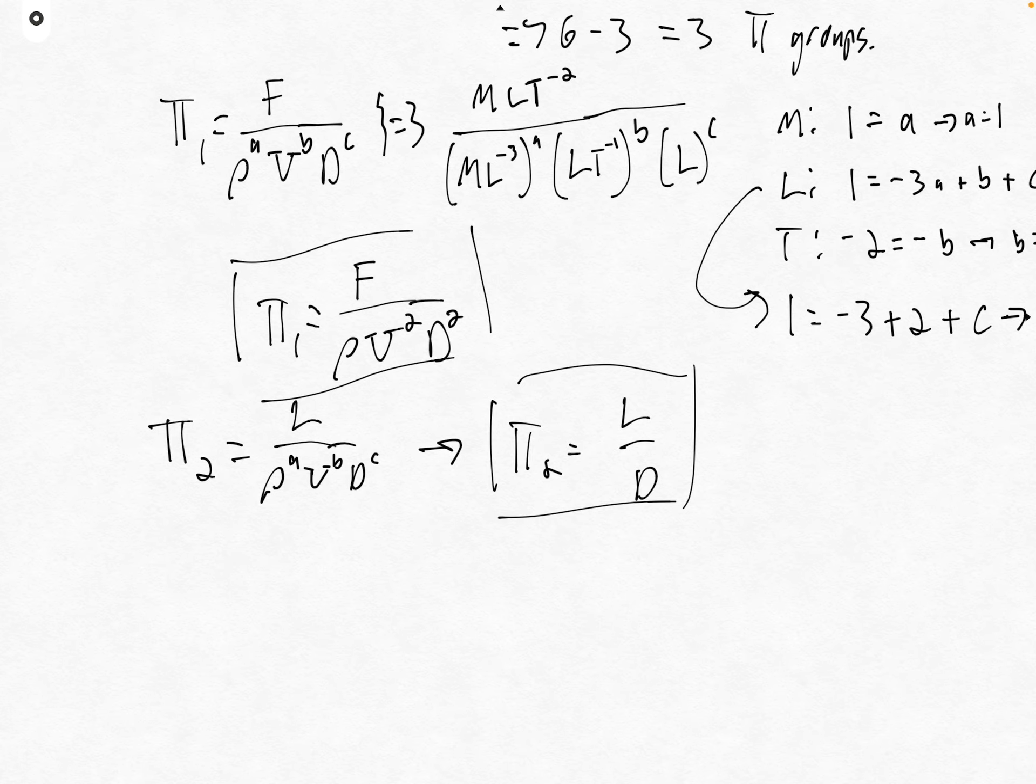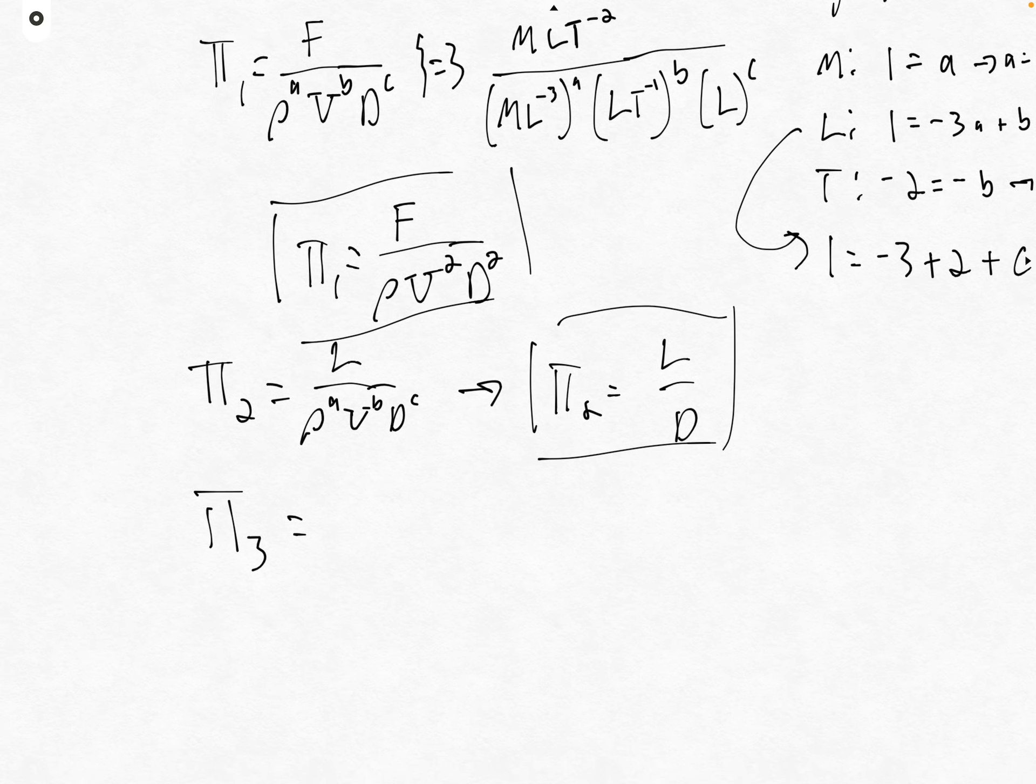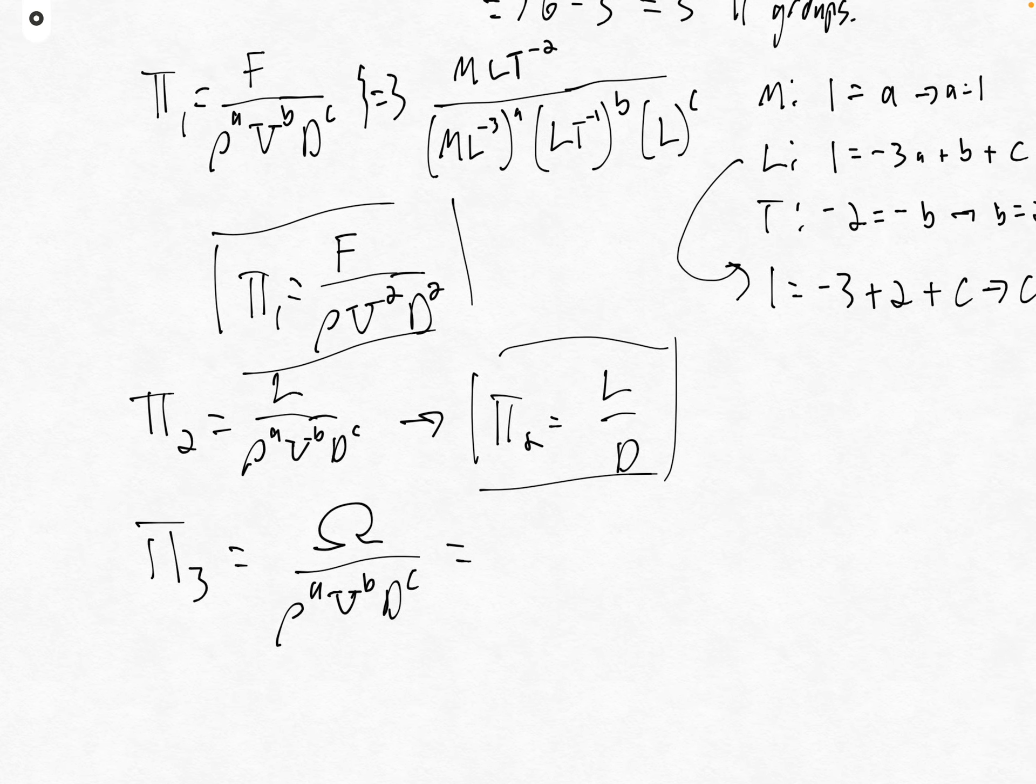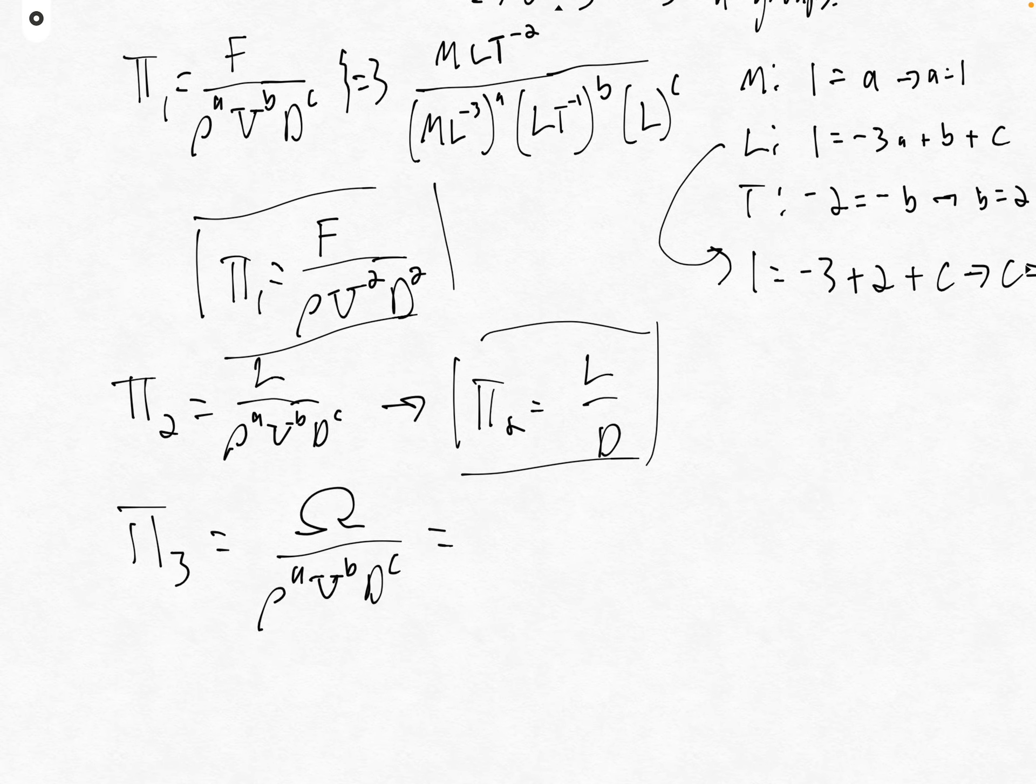Pi three will take care of omega: omega over rho to the a, u to the b, d to the c. Omega is the rotational or angular velocity of the cylinder, expressed for example in radians per second. You might have been asking why we just have MLT when we have this omega. We have to measure that angle somehow, but our measurements of angle are dimensionless. Radians, for example, are dimensionless.